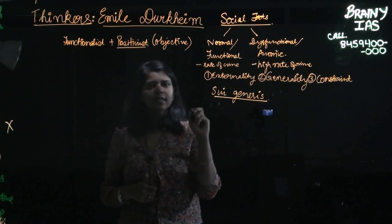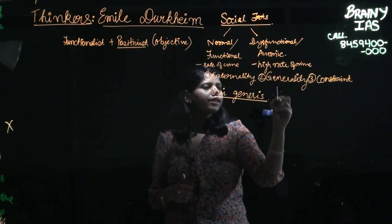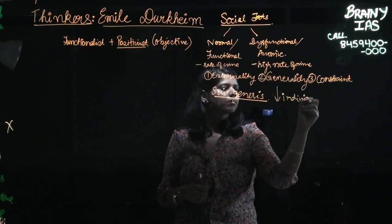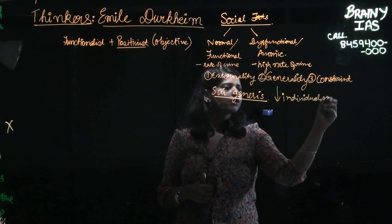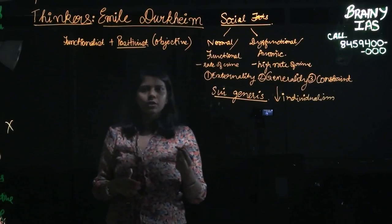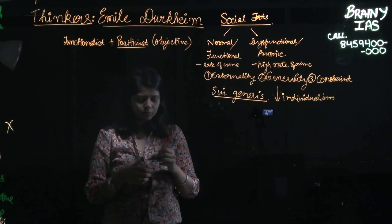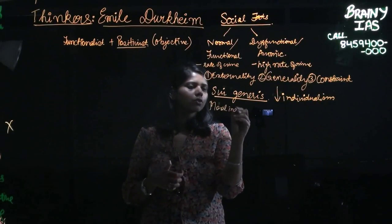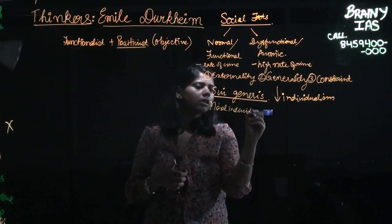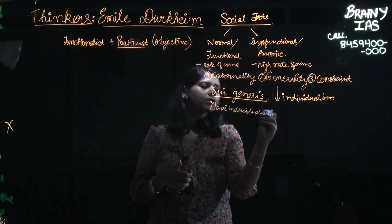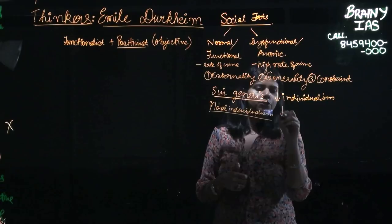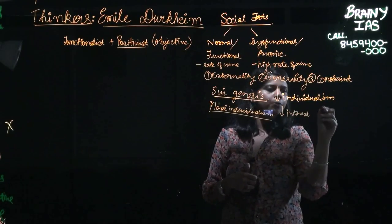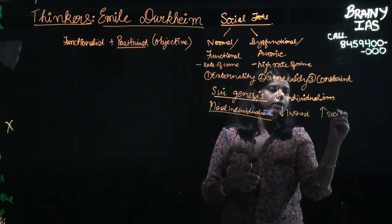That is why Durkheim is credited with the fact that he gave very less importance to individualism. According to him, the society is of more importance than the individual. He gave the concept of moral individualism in social facts. According to moral individualism, a person should let go his own interest in order to protect the collective interest of society.